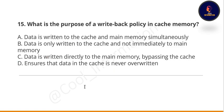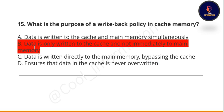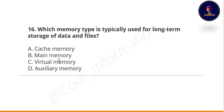Next question: what is the purpose of the write-back policy in cache memory? Option A: data is written to the cache and main memory simultaneously. Option B: data is only written to the cache and not immediately to main memory. Option C: data is written directly to main memory bypassing the cache. Option D: ensures that data in the cache is never overwritten. The correct option is B.